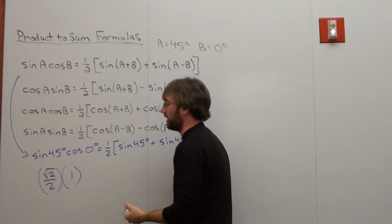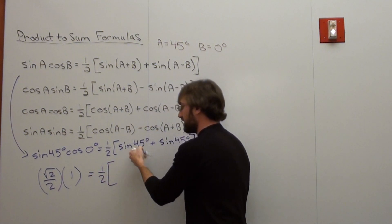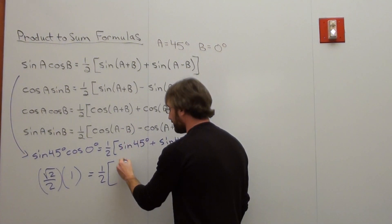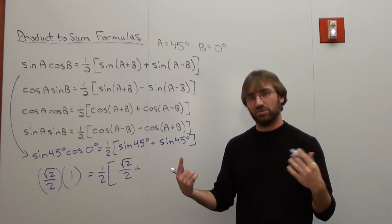Let's show it, not prove it. So we've got one half times the sine of 45 degrees is root 2 over 2, plus the sine of 45 degrees is root 2 over 2.